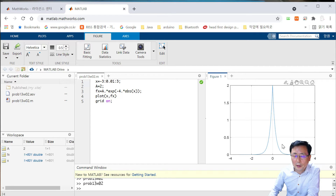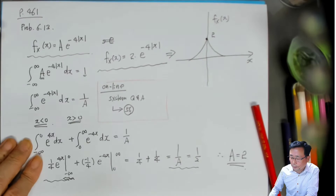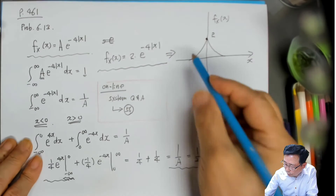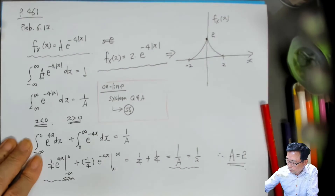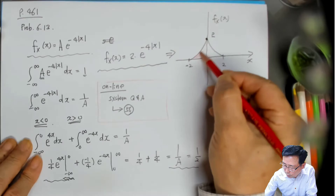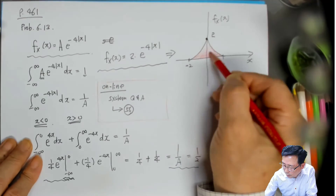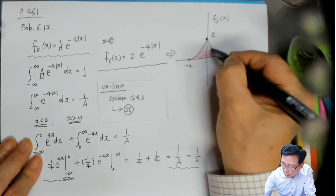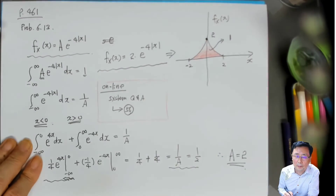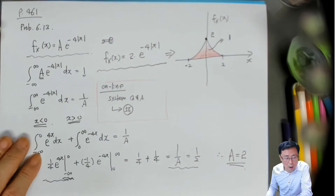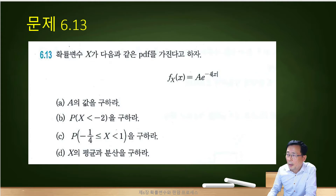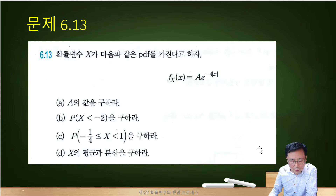이것의 면적이 얼마냐 라는 것은 1이라는 거죠. 그림에서 x가 약 -2에서 +2 사이에 걸쳐 있고, 이 부분의 면적이 1이라는 것입니다. 확률밀도함수에서 이 면적은 1이라는 것입니다. 그랬을 때 문제를 다시 한번 보면, random variable x가 -2보다도 작을 확률을 구하라.